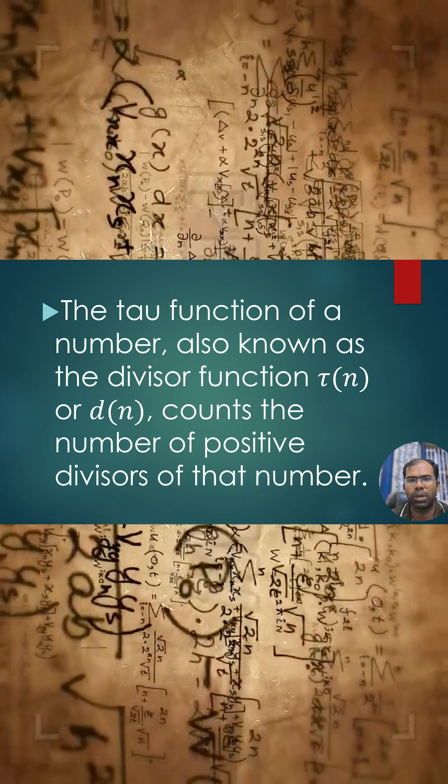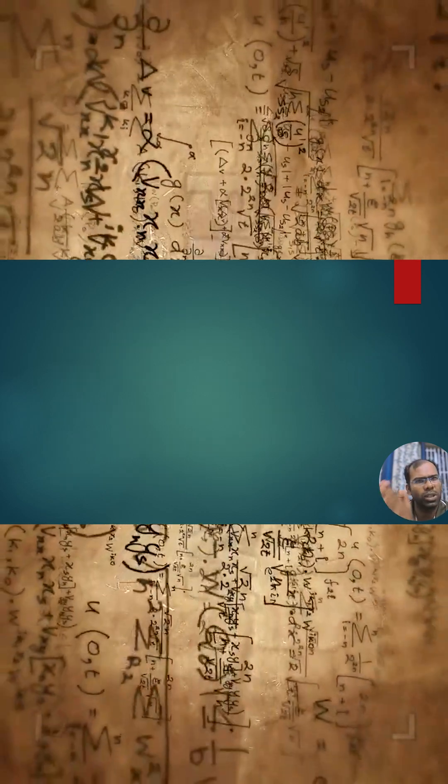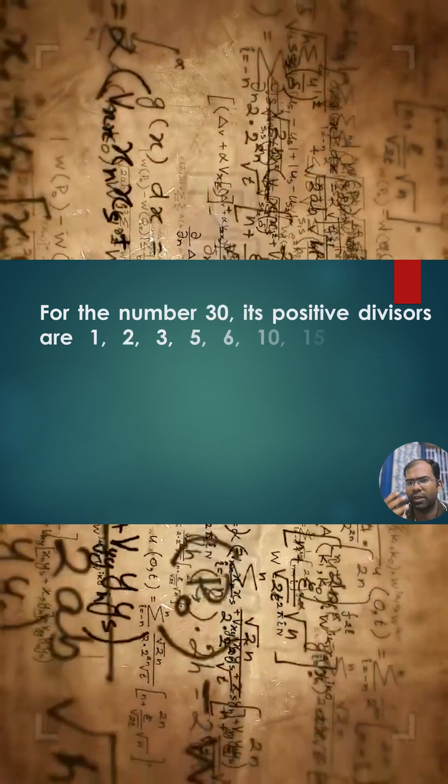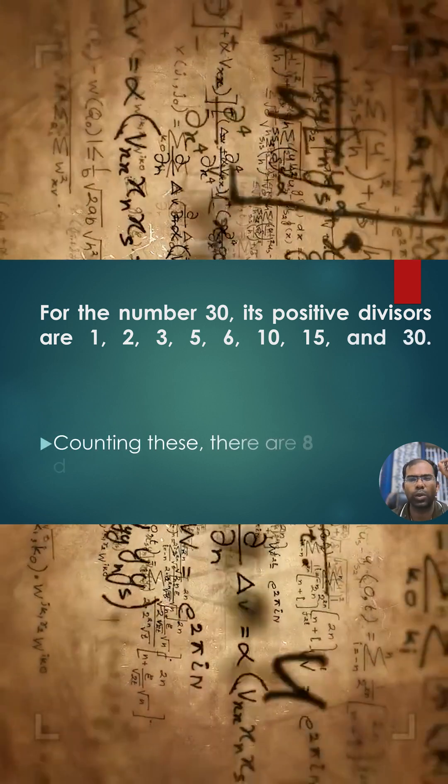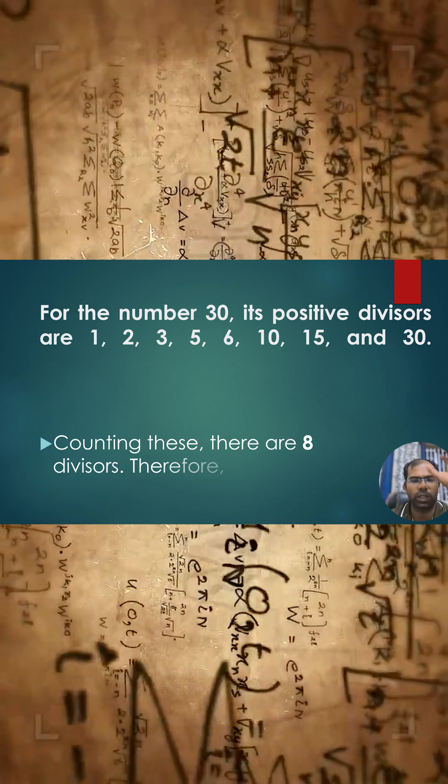For example, we can have the number 30. Its divisors are 1, 2, 3, 5, 6, 10, 15, and 30. On the count, you will have 8 numbers, so the total number of divisors is 8.